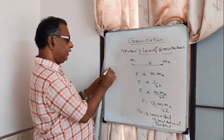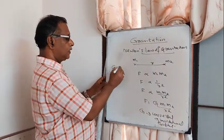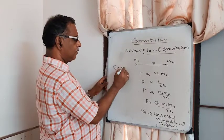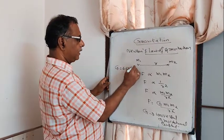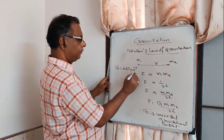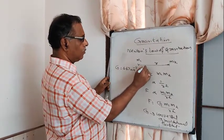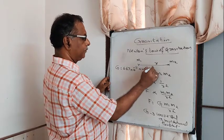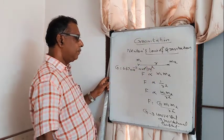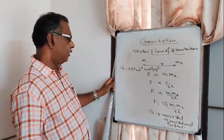The value of G is 6.67 × 10⁻¹¹ Newton meter square per kilogram square.